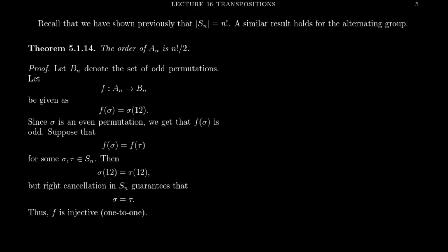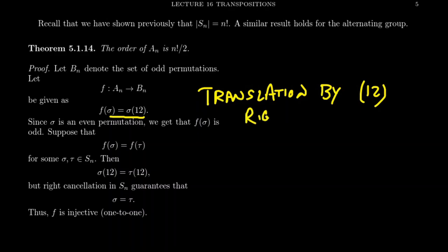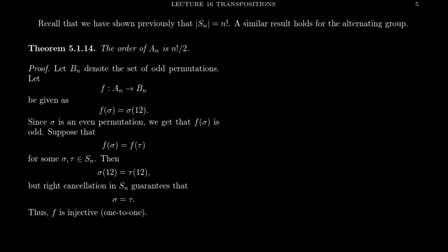This is going to be a nice combinatorial argument. We introduce another set B_n, which is the set of all odd permutations. Notice B_n is not a subgroup of S_n because it doesn't contain the identity, which is an even permutation. We're going to find a function between A_n and B_n. This map sends sigma to sigma times the cycle (1 2). In group theory, this map is called the translation map, or sometimes the right multiplication map — we're just multiplying on the right by the element (1 2).